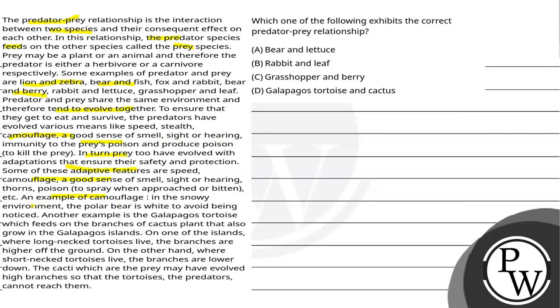In a snowy environment, the polar bear is white to avoid being noticed. Another example is the Galapagos tortoise, which feeds on the branches of the cactus plant that also grows on the Galapagos island.